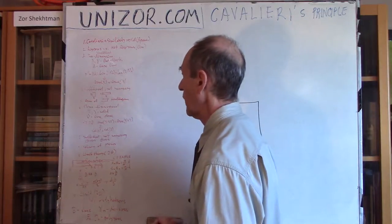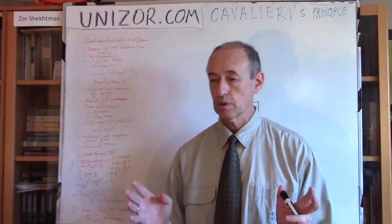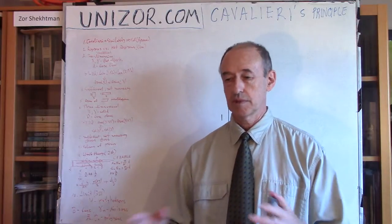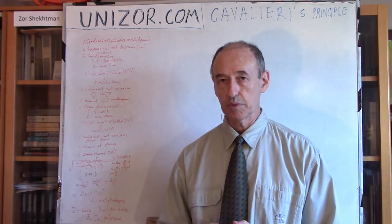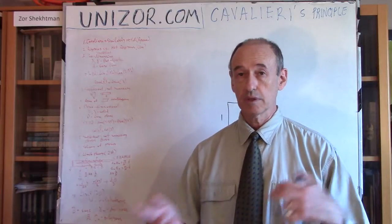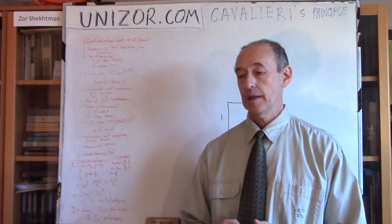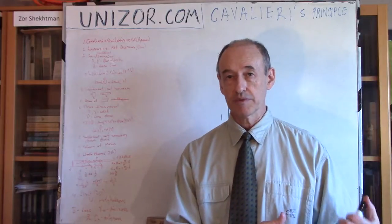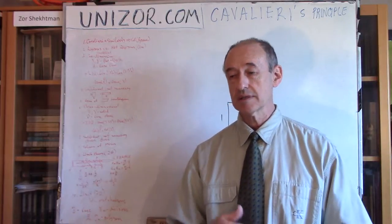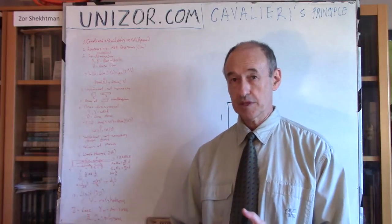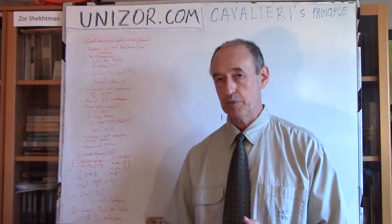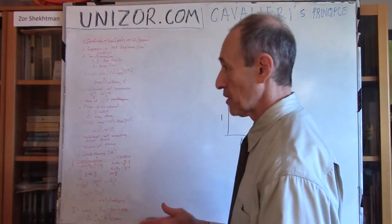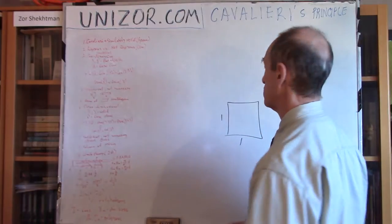There are two different types of Cavalieri principle: one is two-dimensional, another is three-dimensional. My purpose is to measure the volume of the pyramid, which is a three-dimensional case. The two-dimensional case seems to be much simpler, so I would probably start with an explanation of the two-dimensional case, and then we will go to three-dimensional.